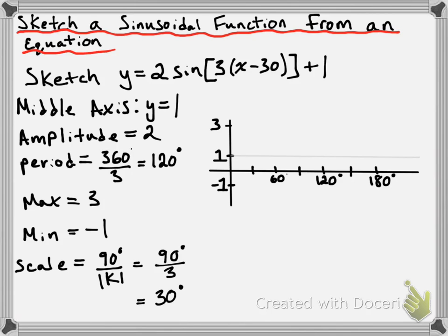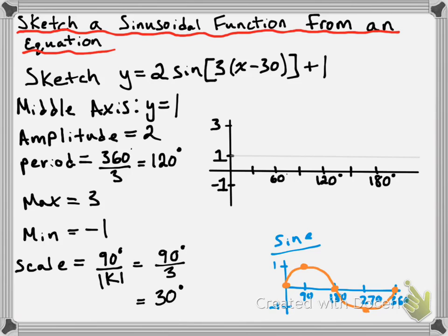Now we're just about ready to start graphing. We need to know what the regular sine function looks like so we can base our graph on that. I'm going to draw in a regular sine function just below as a quick sketch. The sine function starts at the x-axis, goes up to its maximum, goes back down to the x-axis, goes down to its minimum, and then goes back to the x-axis. We're going to use this general pattern to sketch our graph.